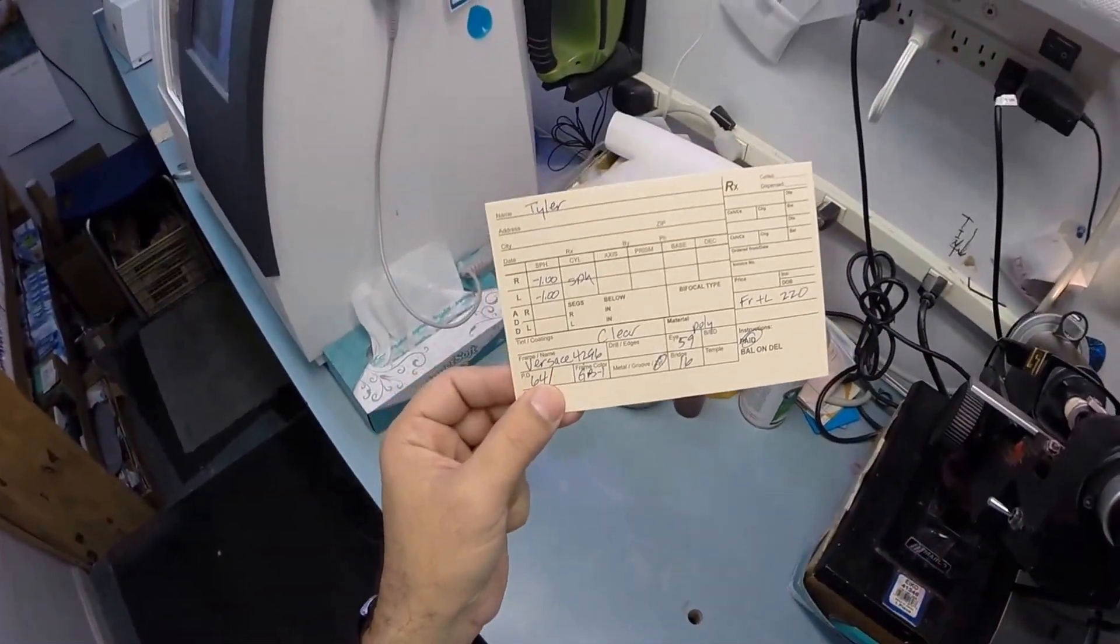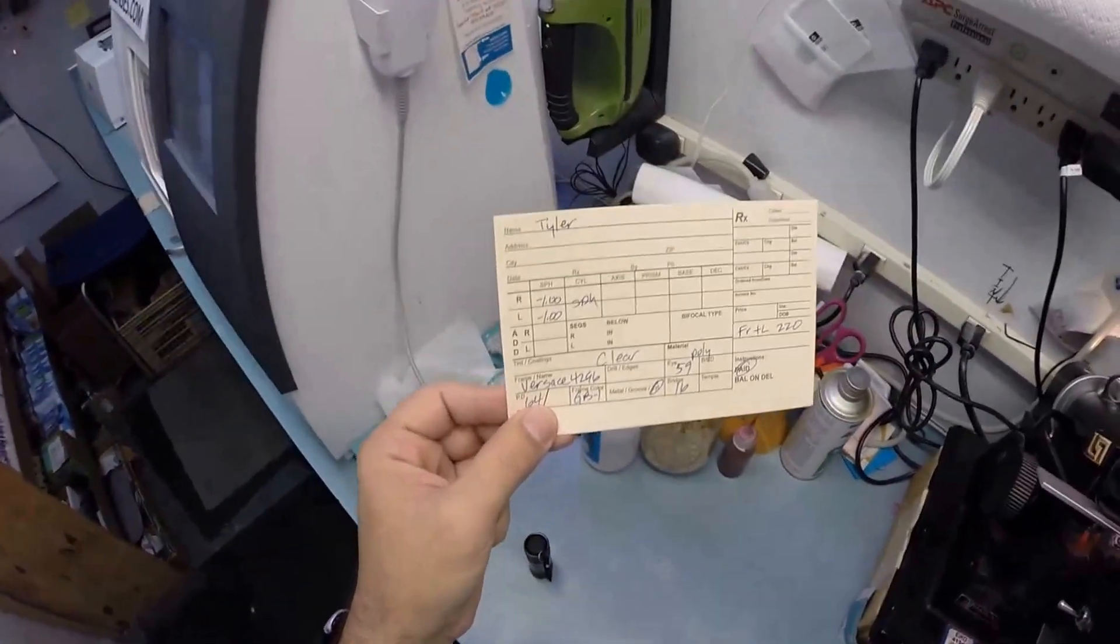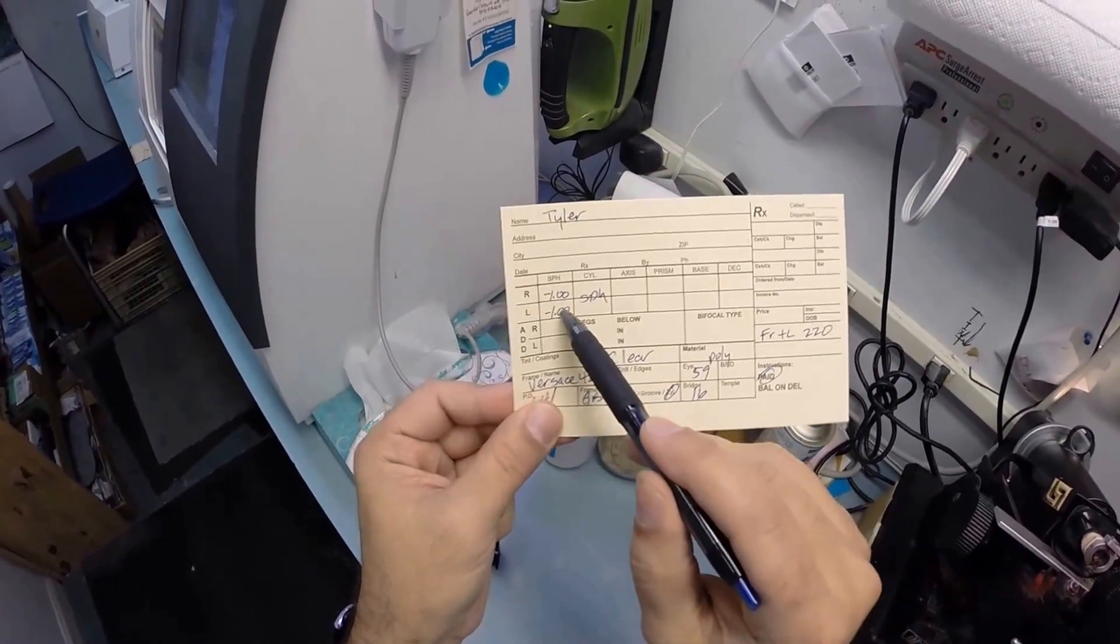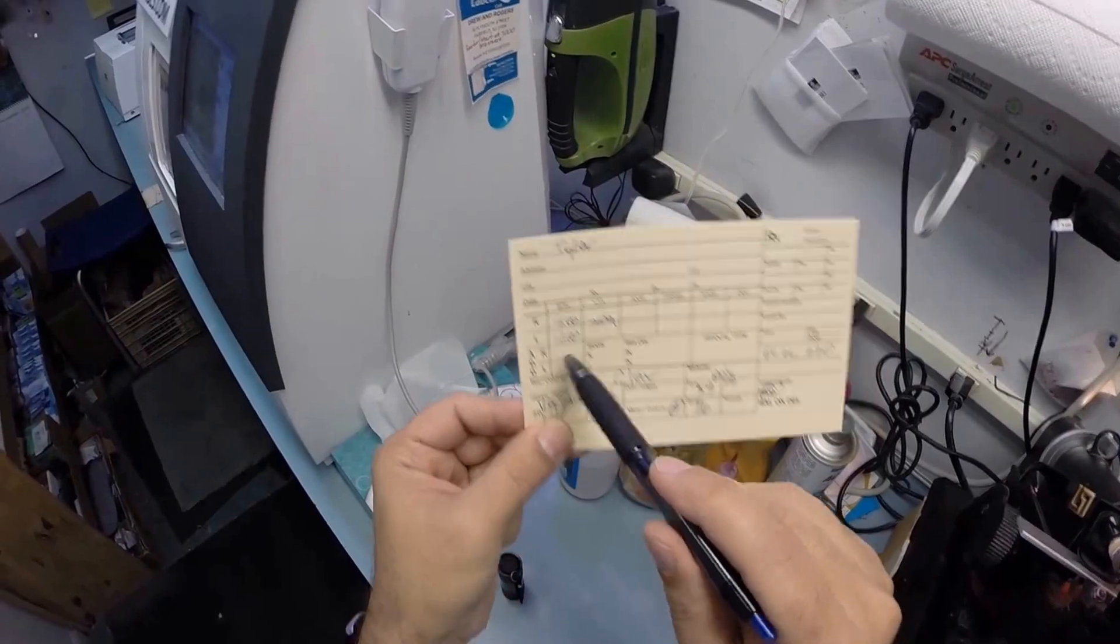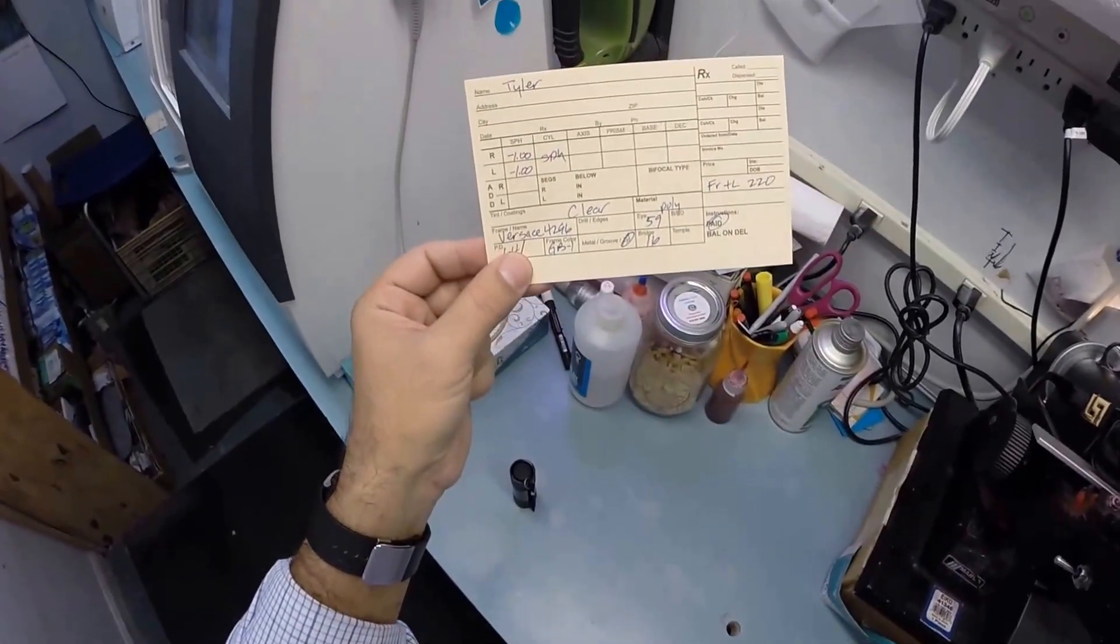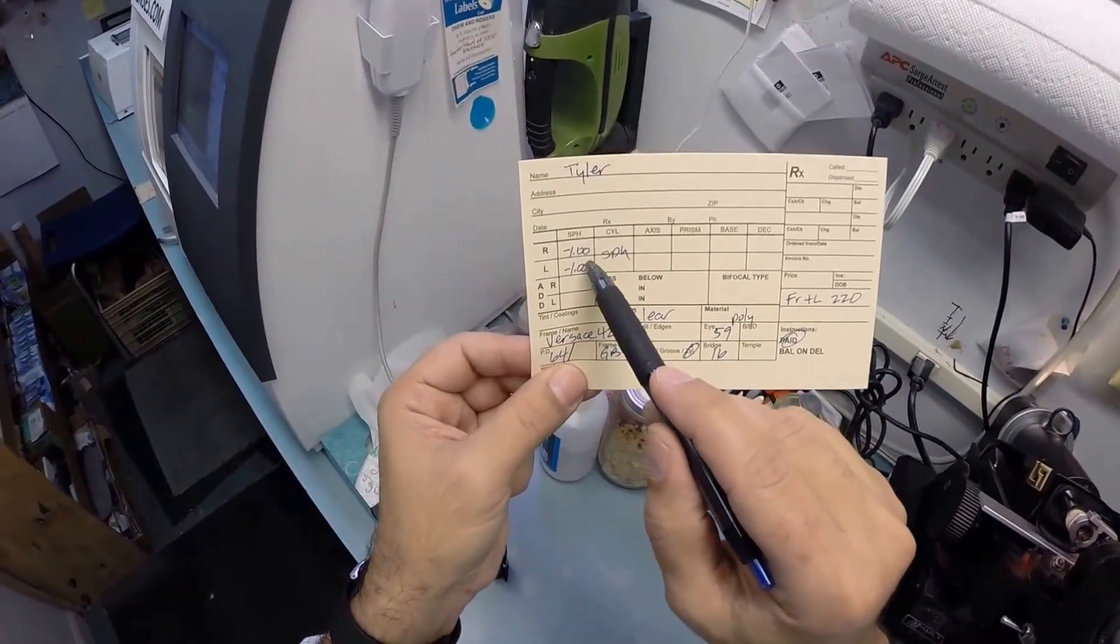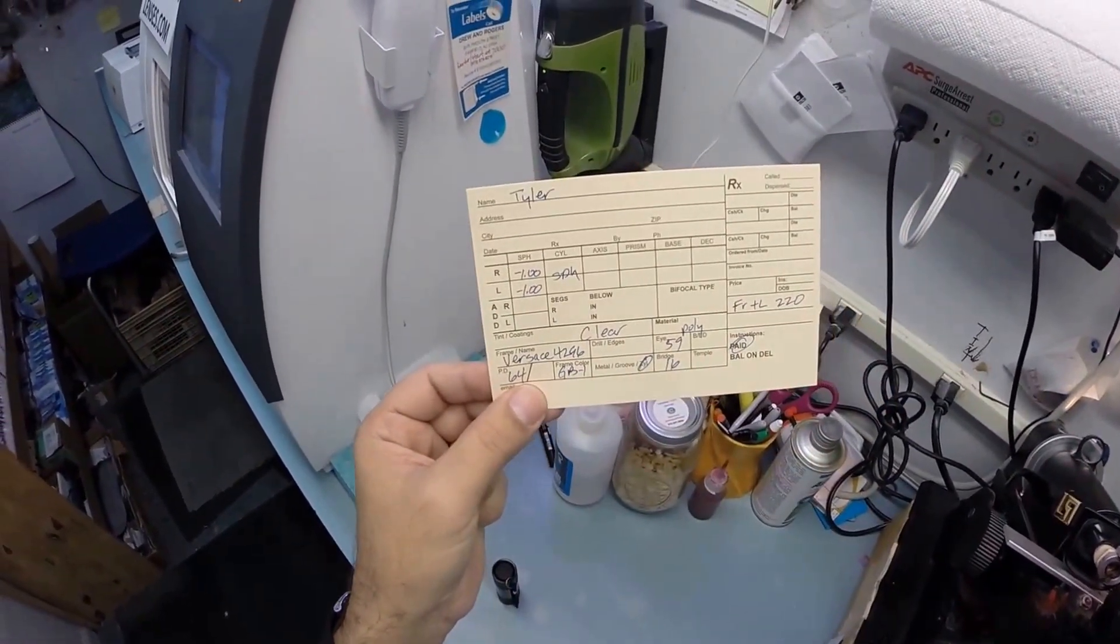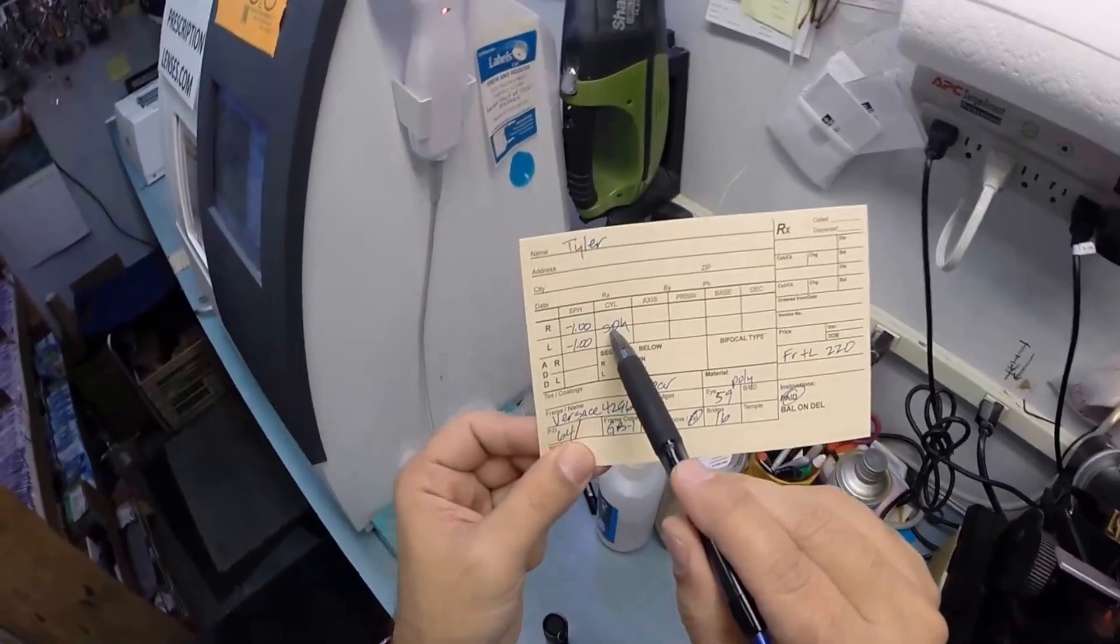It starts at zero, which we call Plano—other people in Texas call it a city. But it goes up in quarter increments: 0.25, 0.50, 0.75, 1. You need four steps of minification. You are nearsighted. Without your glasses on, everything is much too large. When you put these on, this will minify—hence the minus term—down to the correct size.